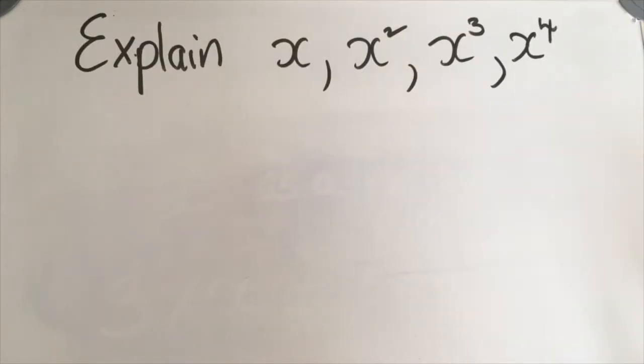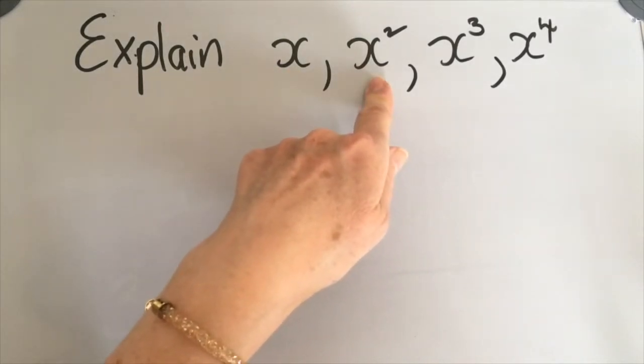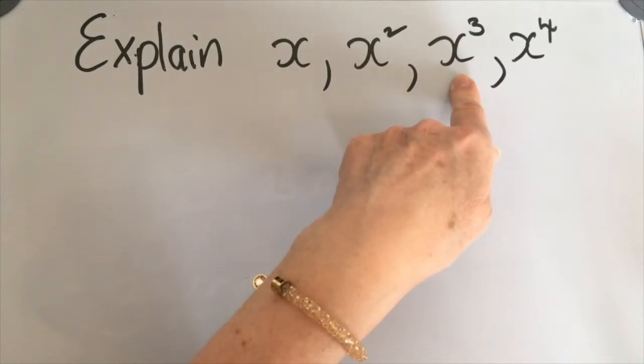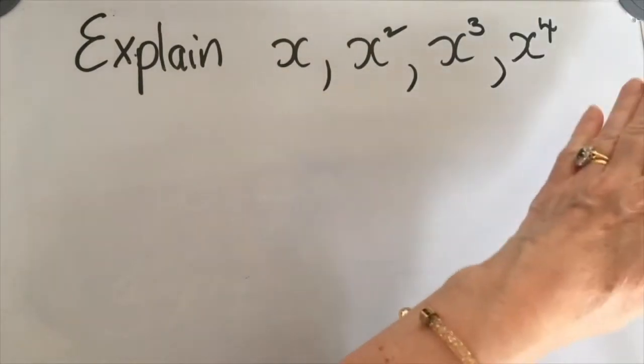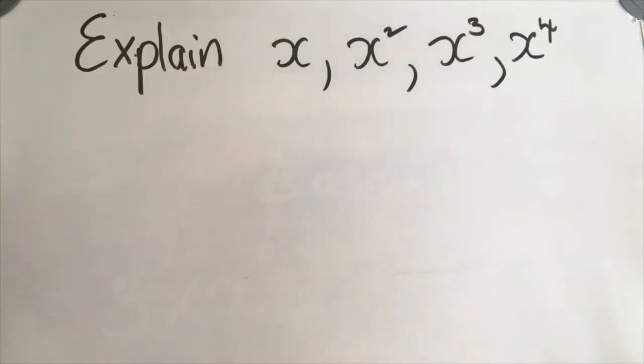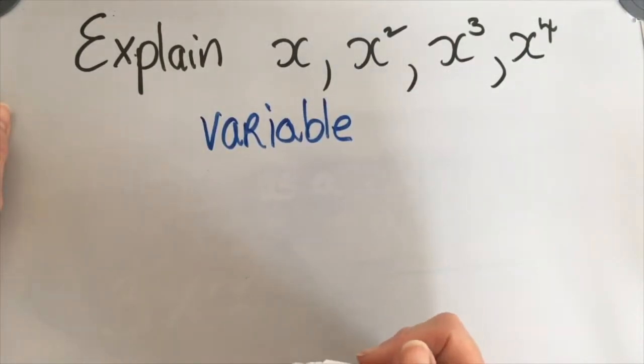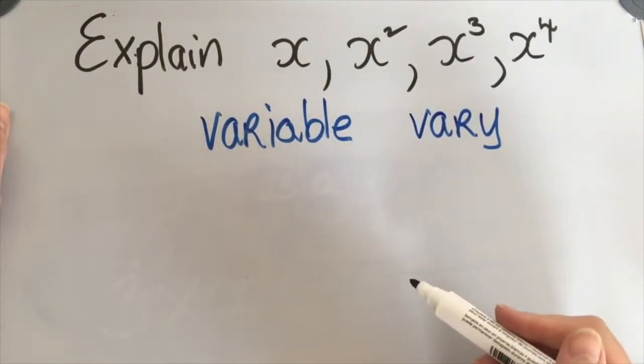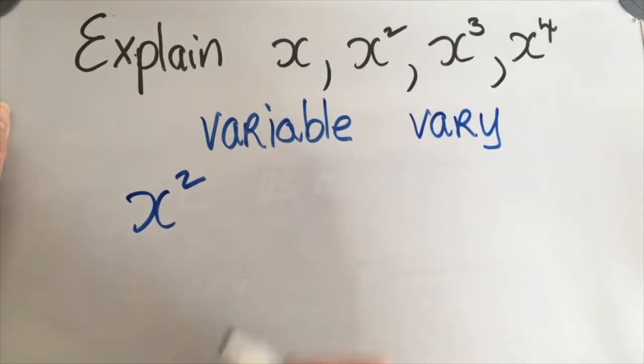Look at these terms: x, x to the power of 2 (often called x squared), x to the power of 3 (x cubed), and x to the power of 4, and we could go on. X first of all is called a variable. Variable comes from the word vary, and to vary means to change. x squared means x multiplied by x.